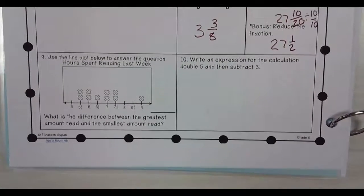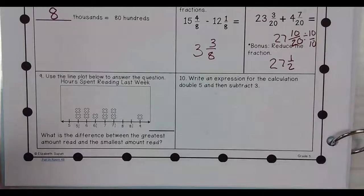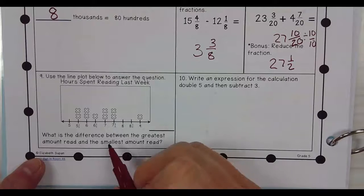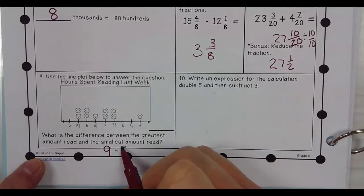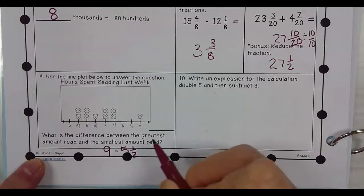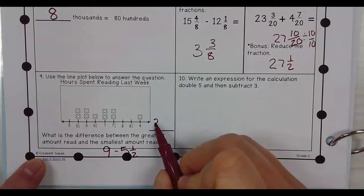Use the line plot below to answer the question. Hours spent reading last week. What is the difference between the greatest amount read and the smallest amount read? So you would say 9 minus 5 and 1 half. 9 minus 5 and 1 half gives you 3 and 1 half.